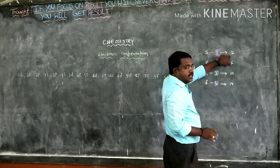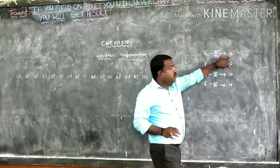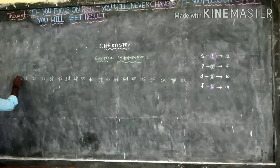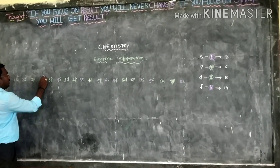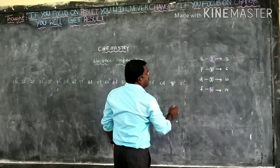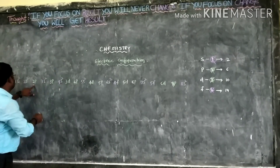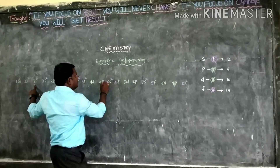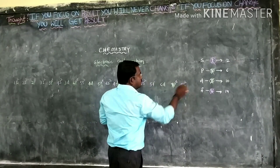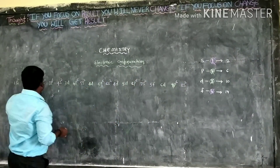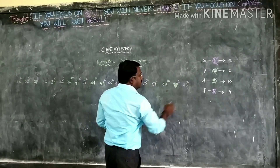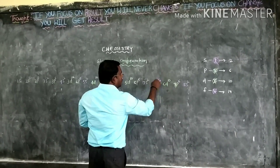Now we have to write the electrons — the maximum number of electrons in each orbital. In S orbital there are two electrons, so wherever S orbital appears, you keep two on its head. P orbital gets six. D orbital gets ten. F orbital gets fourteen. This is the order to write. Now you can ask me any element in the periodic table.